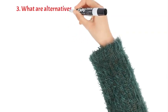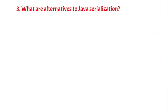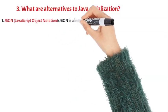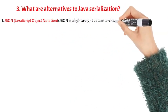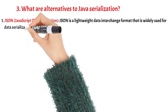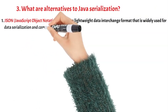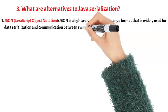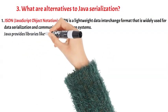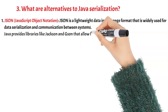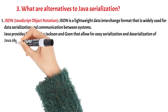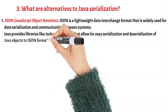What are alternatives to Java Serialization? JSON (JavaScript Object Notation) is a lightweight data interchange format that is widely used for data serialization and communication between systems. Java provides libraries like Jackson and Gson that allow for easy serialization and deserialization of Java objects to JSON format.